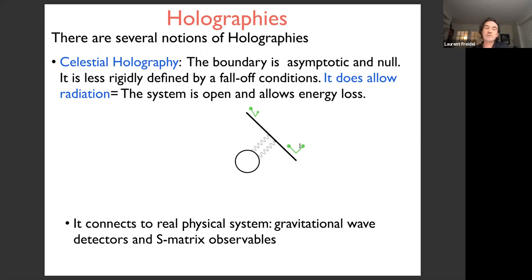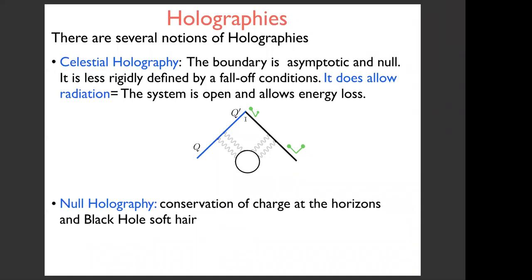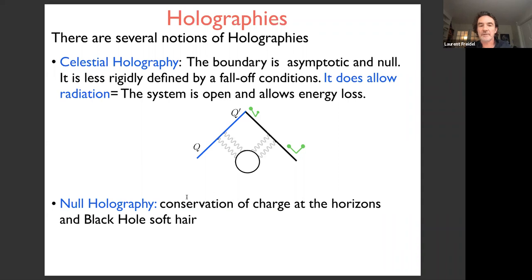In celestial holography, relaxed boundary conditions allow the presence of radiation, meaning the system is open and allows energy and information loss through asymptotic infinity. Unlike AdS/CFT, celestial holography connects to real physical systems — gravitational wave detectors and S-matrix observables. There's also an extension called null holography, which includes physical systems like black holes, horizons, and the flow of charges along the horizon, not only the memory effect at infinity.